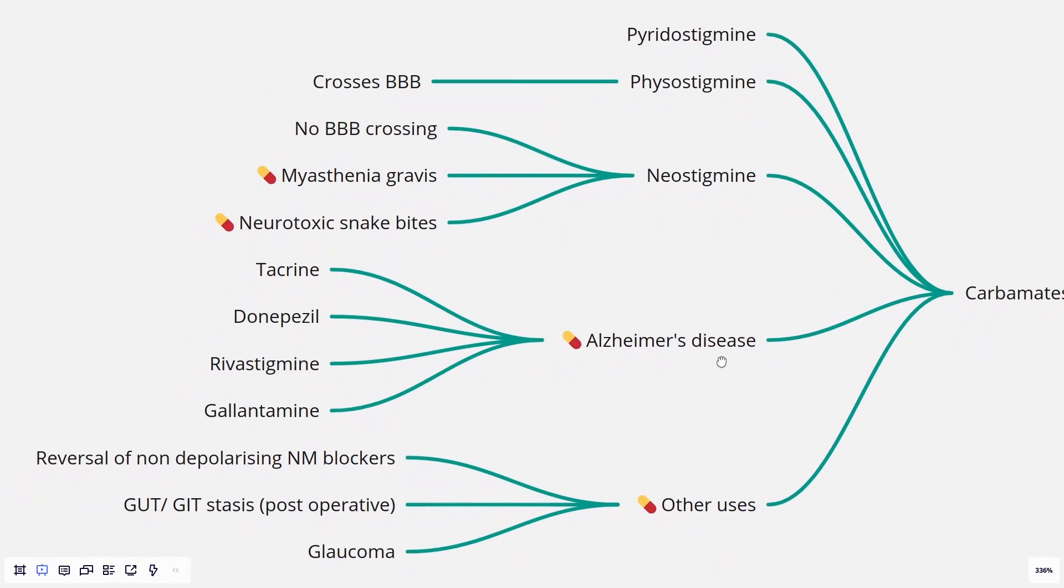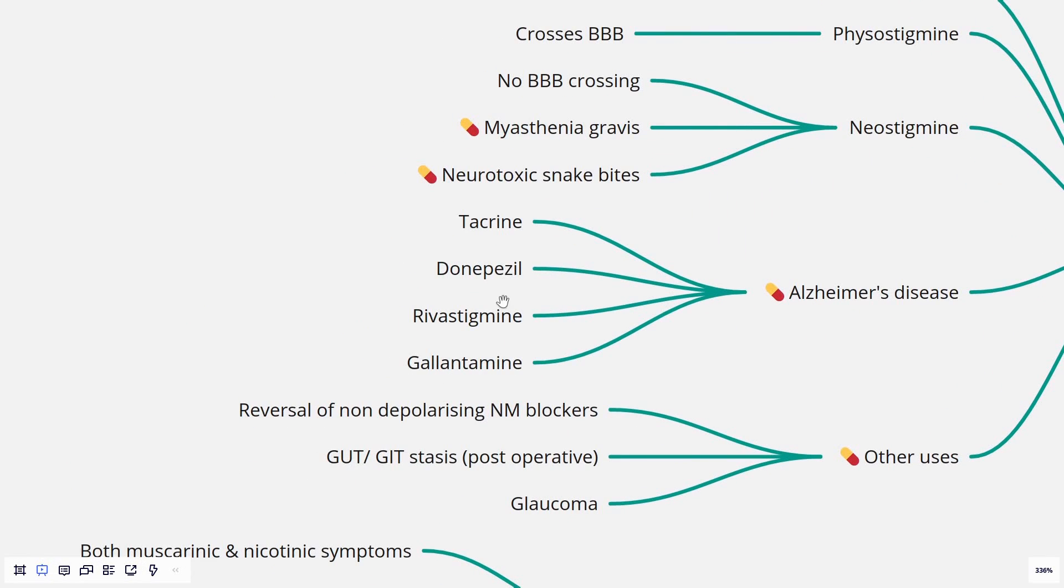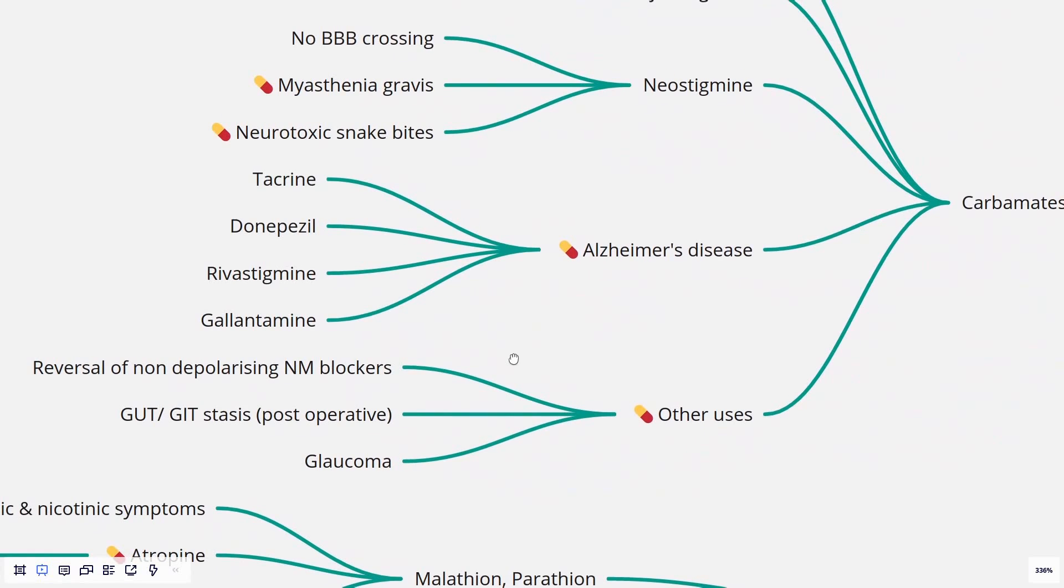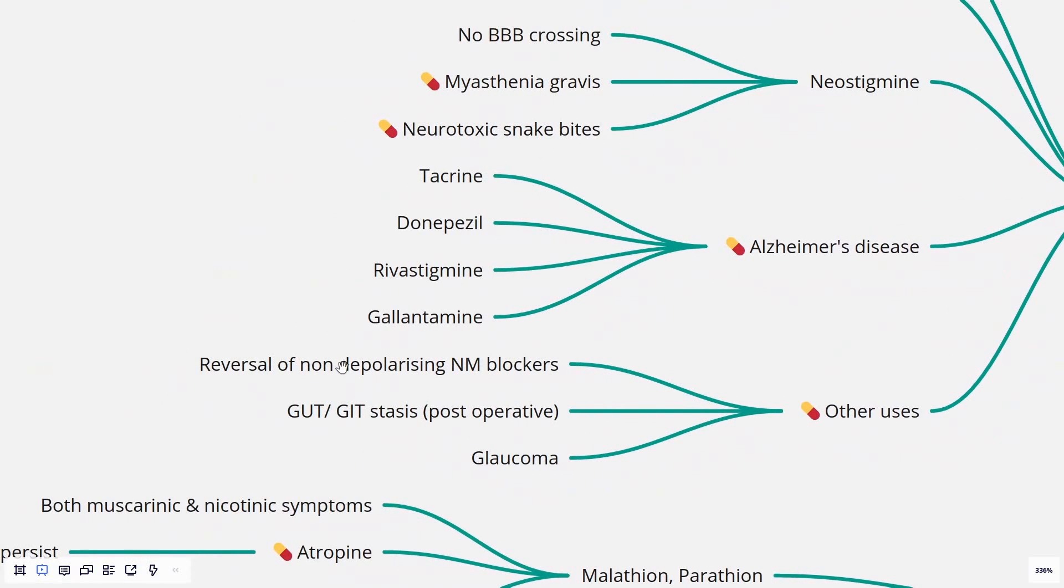In Alzheimer's disease, there are a few drugs which are very specifically used: tacrine, donepezil, rivastigmine, and galantamine. Other uses of carbamates: we have reversal of non-depolarizing neuromuscular blockers—neostigmine is commonly preferred—GUT or GIT stasis. Similar to bethanechol, neostigmine can be used subcutaneously, and also for glaucoma.